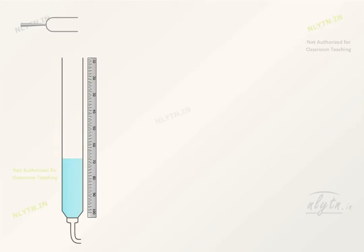If a tuning fork kept in this position is vibrated above the open end of tube, longitudinal waves are set in the air column. If the length of air column and frequency of tuning fork are related by this equation, then a standing wave is formed.